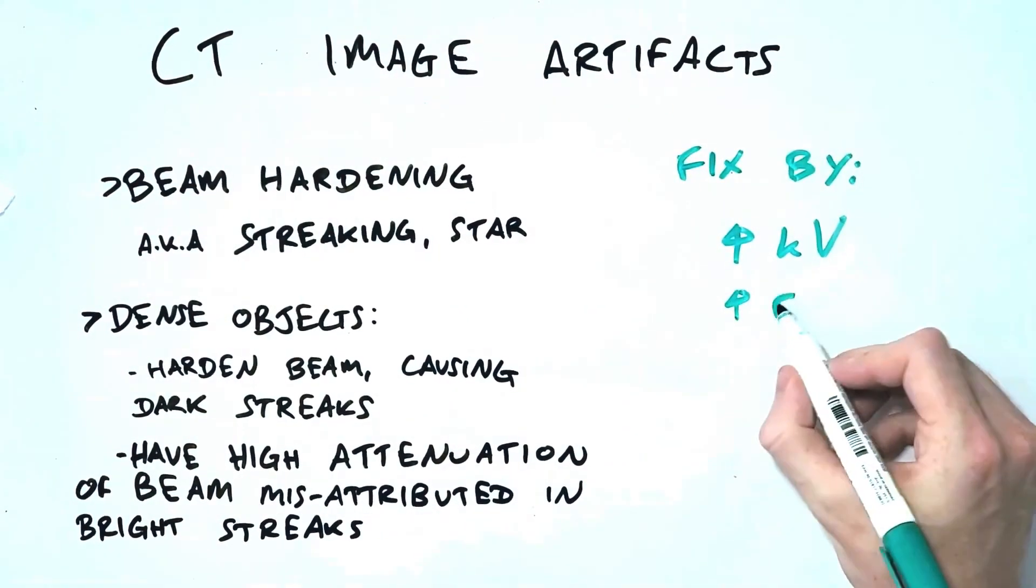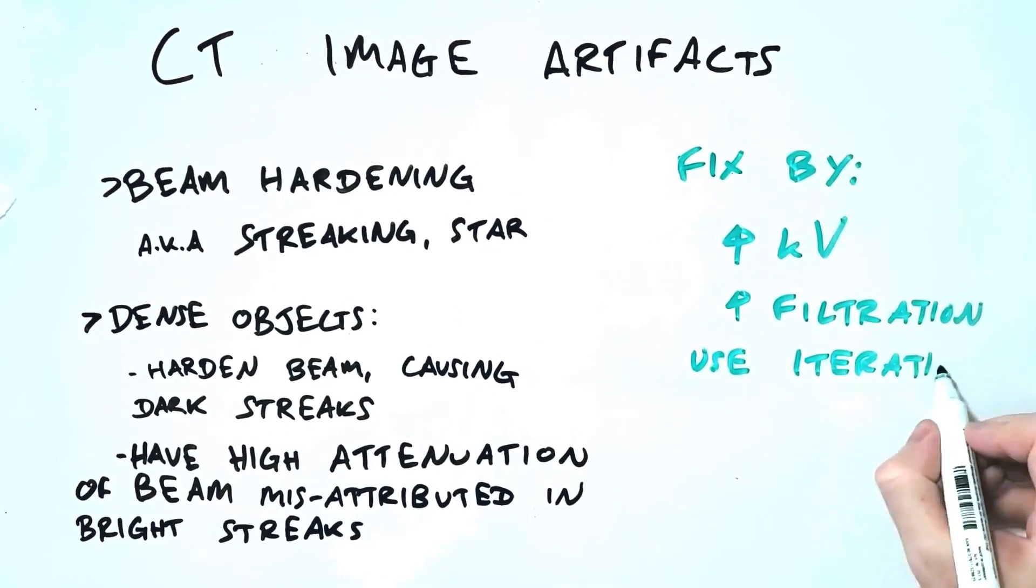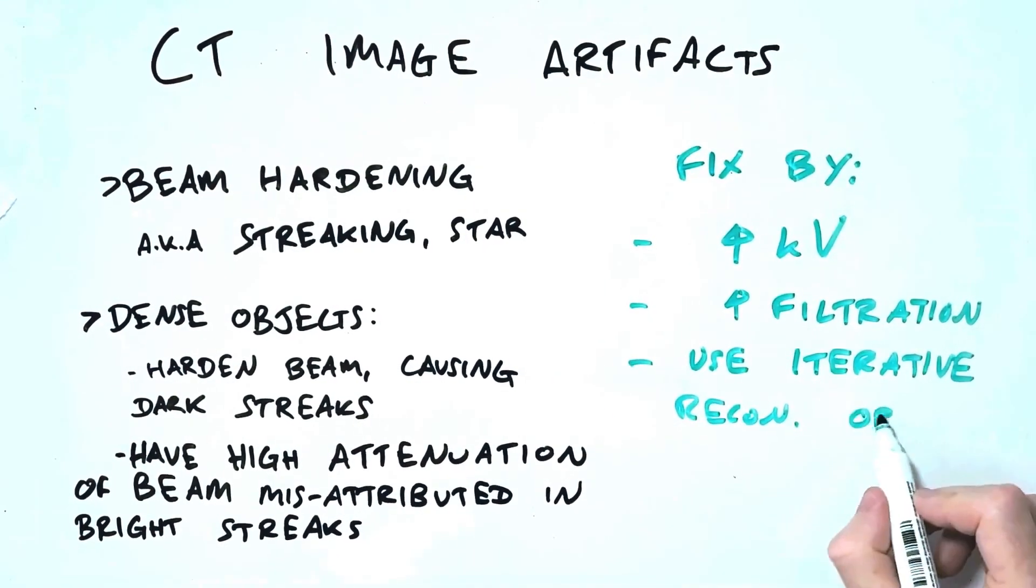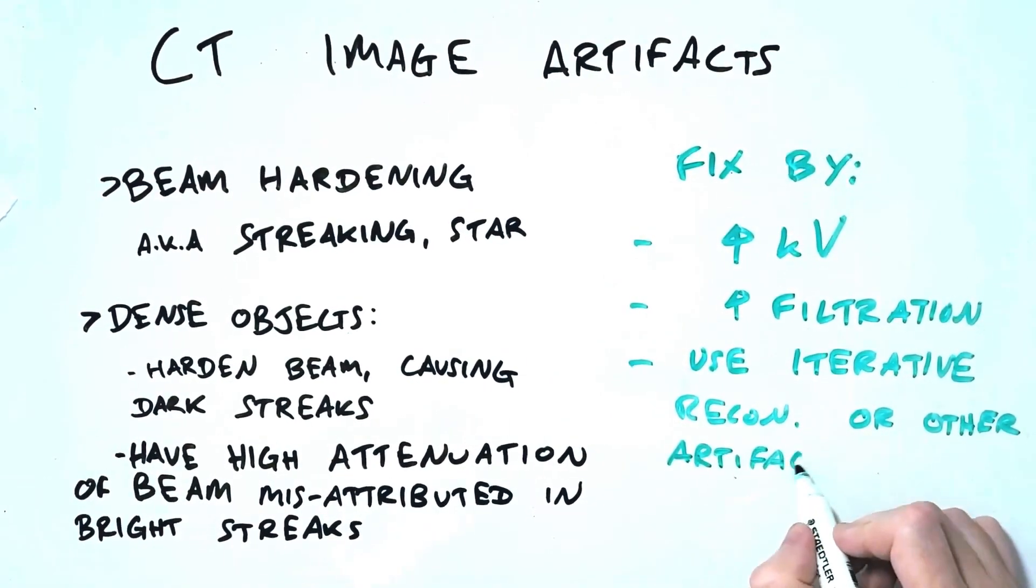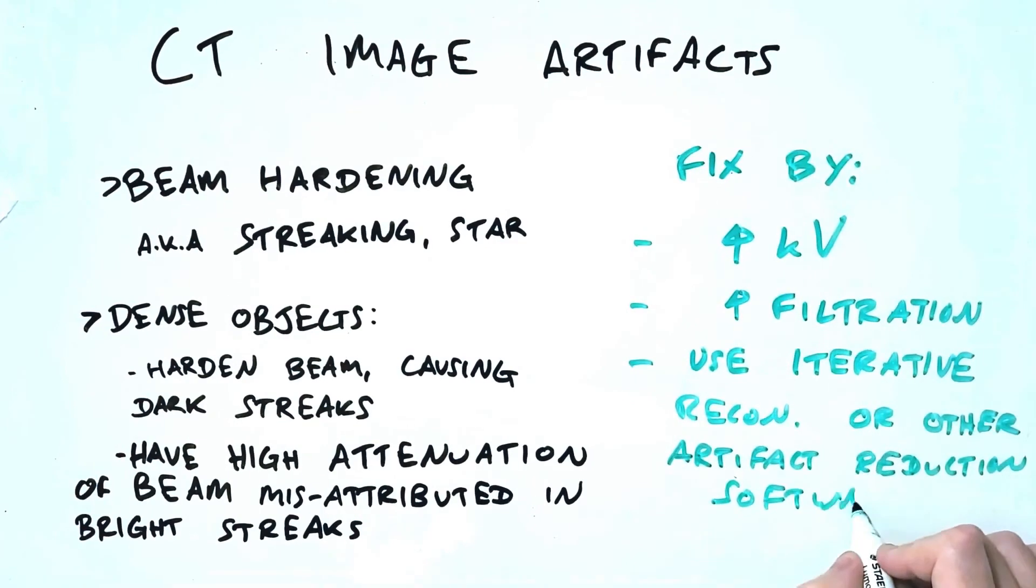This artefact can be decreased by using a beam with a higher average energy, either through increasing the KV or using filtration. Using iterative reconstruction or artefact reduction software can also be very effective.